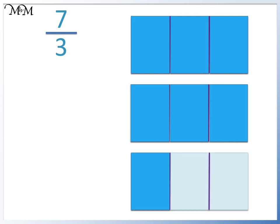In total, we have 2 wholes and 1 out of 3. So 7 thirds is the same as 2 and 1 third. This is a mixed number.